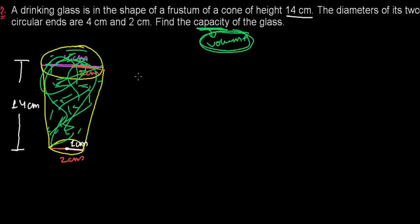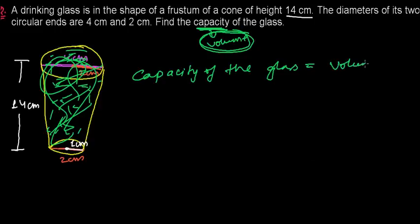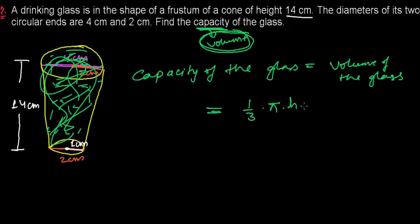So we write: capacity of the glass equals volume of the glass, or volume of the frustum-shaped glass. The volume of a frustum is (1/3) × π × h × (r1² + r2² + r1·r2), where h is the height, r1 and r2 are the radii of the two circular ends, and the last term is the product of both radii.